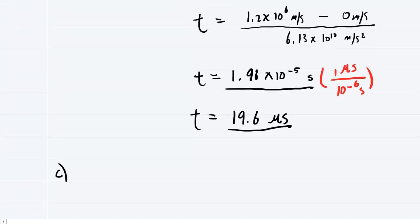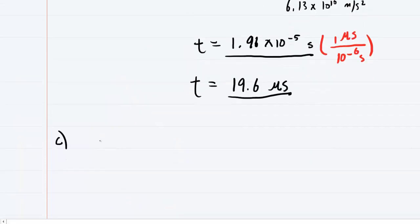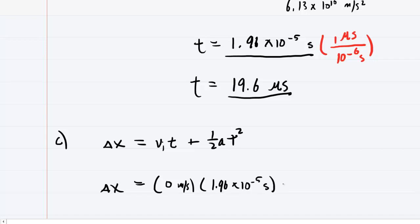We move on to part C, and part C wants us to determine how far has it moved in that interval. So that's a question of displacement. And we know that displacement would equal the initial velocity times time plus 1 half acceleration times time squared. Recall that the initial velocity was 0, so we'll have 0 meters per second multiplied by the time. Make sure that you use the seconds version of time, not the microseconds here.